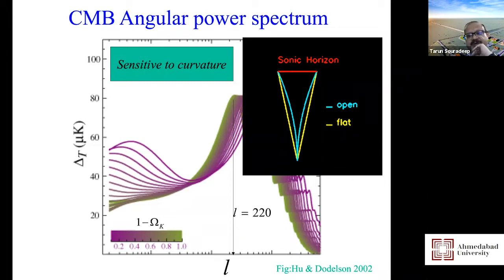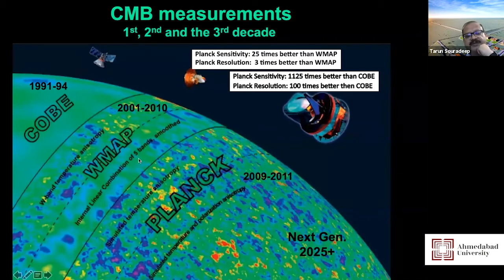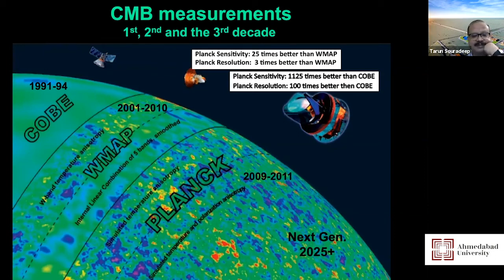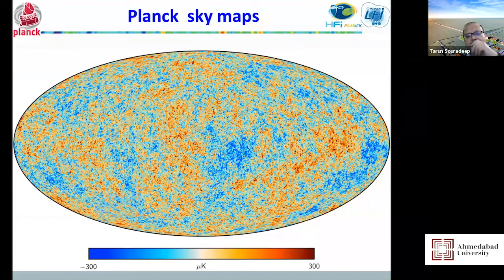Observationally, we had the Cosmic Background Explorer (COBE) that opened up this field, then the next decade was taken up by the Wilkinson Microwave Anisotropy Probe (WMAP) which got fluctuations at much higher resolution. The subsequent decade was dominated by Planck, which took the most accurate possible picture of temperature fluctuations in the CMB. There are also many ground-based and balloon-borne experiments all through this time, but these three space experiments are milestones.